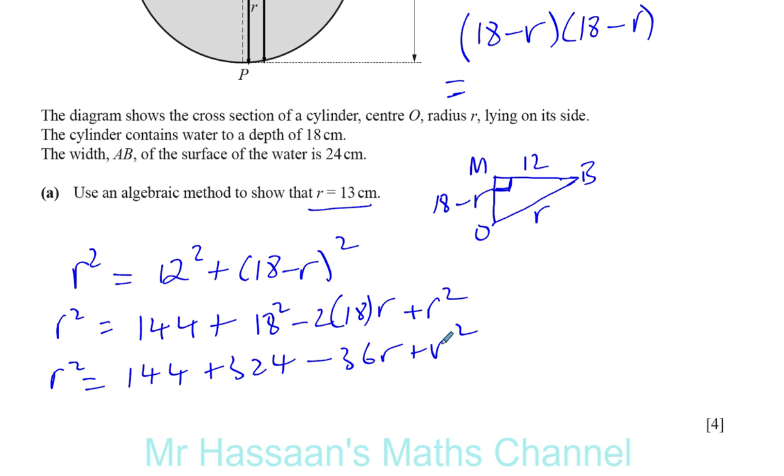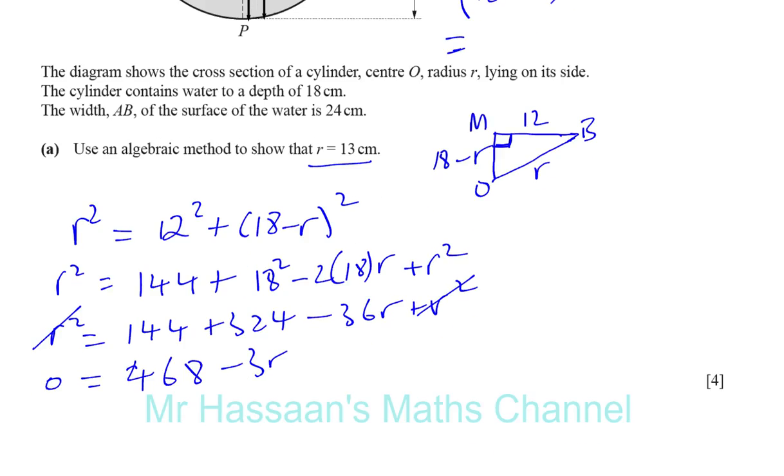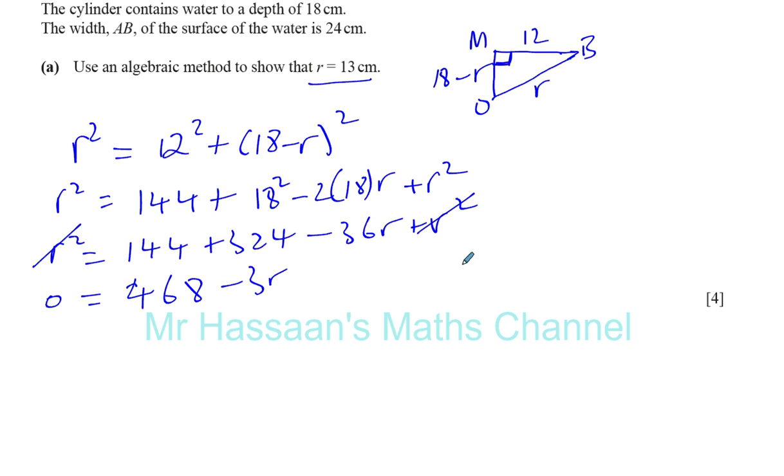Now, if you take away R squared from both sides, R squared will disappear. So you're left with 0 equals 144 plus 324, that's 468, minus 36R. So 468 minus 36R equals 0. So you can now solve this. I'll continue over here. So I can say 36R equals 468, if you add 36R to both sides. Then divide both sides by 36.